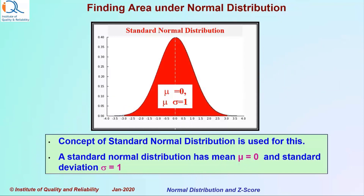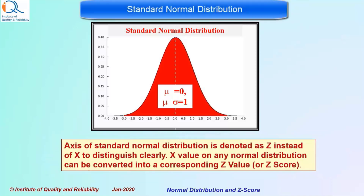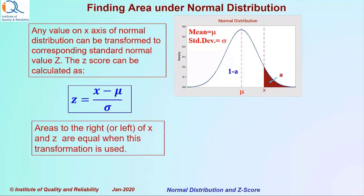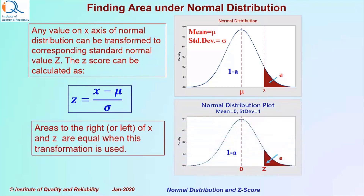We have explained in our previous video on Normal Distribution how the concept of standard normal distribution can be used to determine areas under normal distribution. Any value on the x-axis of normal distribution can be transformed to a corresponding standard normal value z. The z-score can be calculated as z equal to x minus mu upon sigma. Areas to the right or to the left of x and z are equal when this transformation is used. A standard normal distribution has mean 0 and standard deviation of 1.